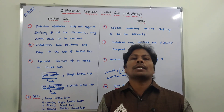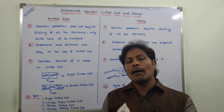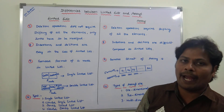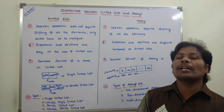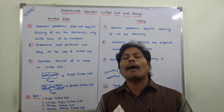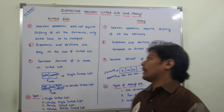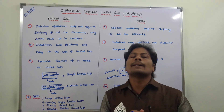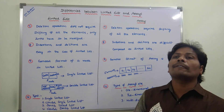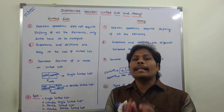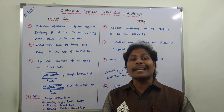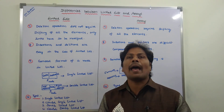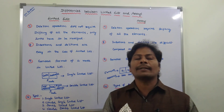Deletion operation in a linked list does not require shifting of all the elements — only links have to be modified. But in the case of arrays, deletion operation requires shifting of all the elements. Overall, insertions and deletions can be performed easily on a linked list, but insertion and deletion of elements from an array is somewhat difficult when compared to a linked list.